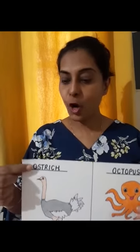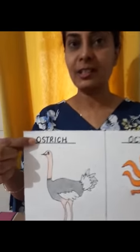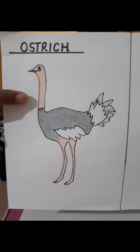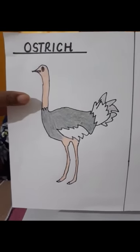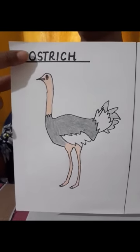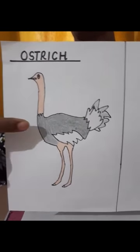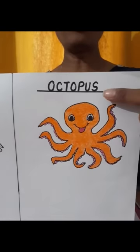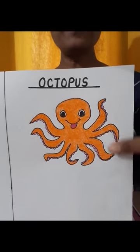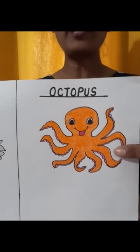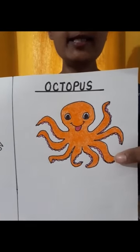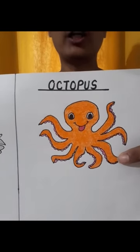O for ostrich. Ostrich is a bird. O for octopus. An octopus lives inside the sea — it is a sea creature.